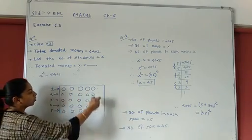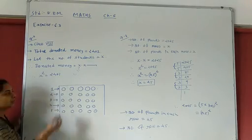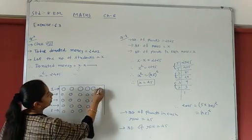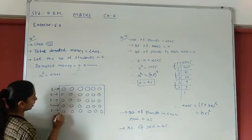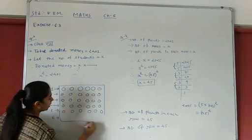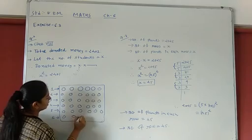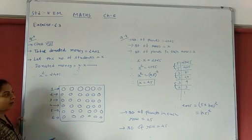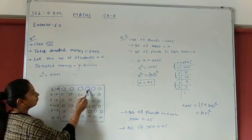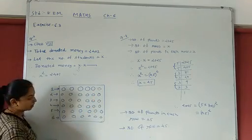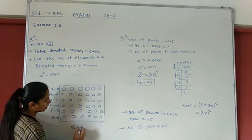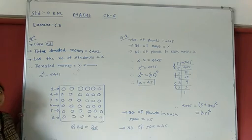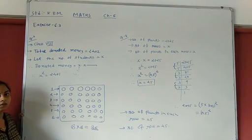In short, this is a square — length and breadth are equal. If I have 6 rows and 6 plants per row, the total number of plants is 6 × 6 = 36. Count and see — total 36 plants are here. If there are 5 rows, then total 25 plants are here.